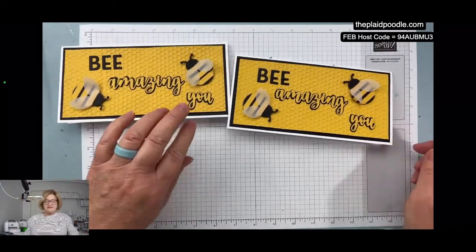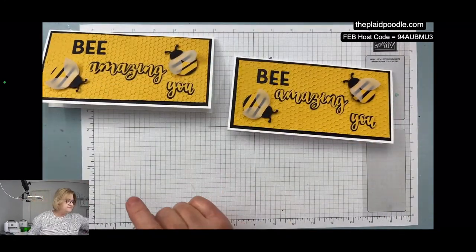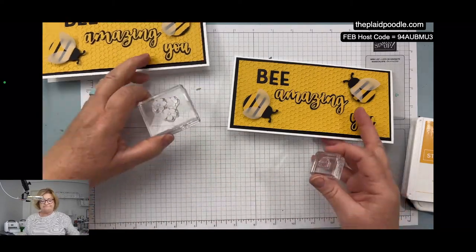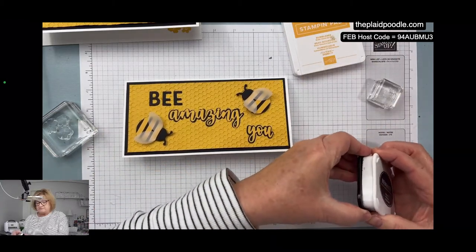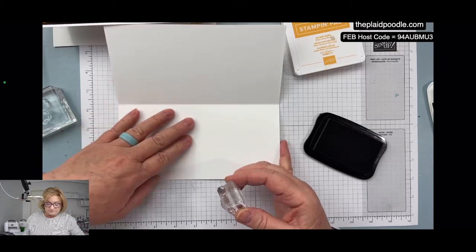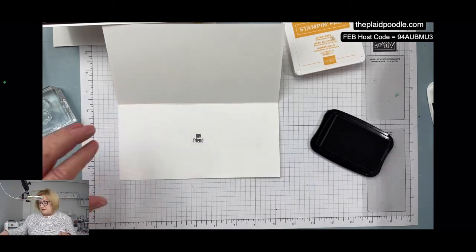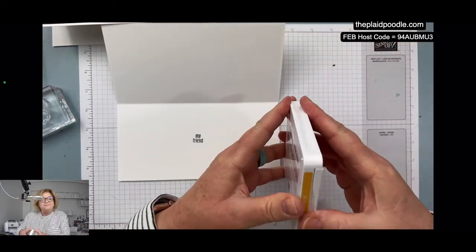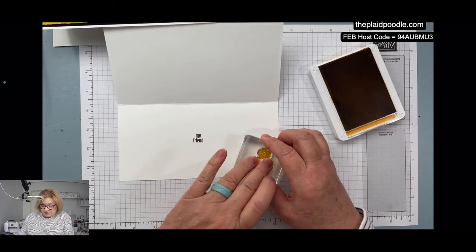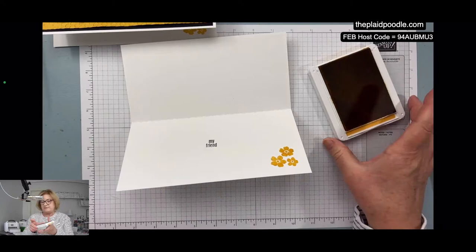All right, that's the card front. And then for the inside of the card, I went ahead and used My Friend and these little flowers. It's nothing too fancy, but I thought 'Bee amazing you, my friend' was a good little sentiment. And I'm using the black Memento for My Friend, and for the little flowers I'm using Bumblebee. And this little stamp really goes perfectly in the corner.